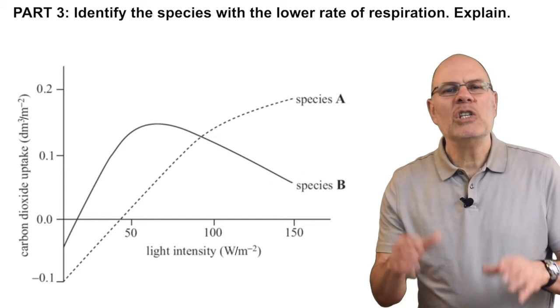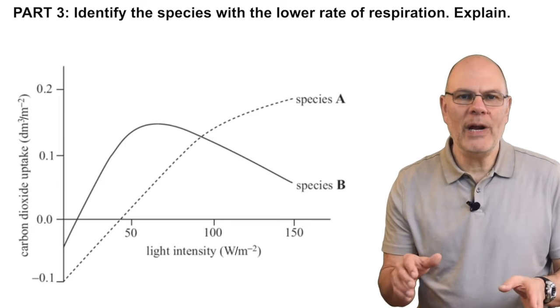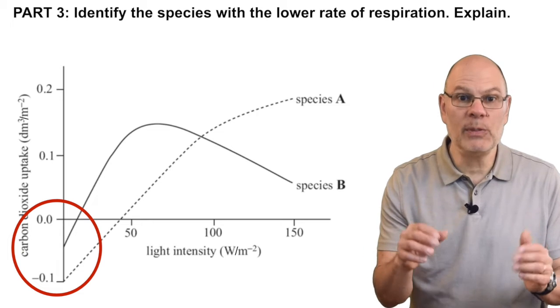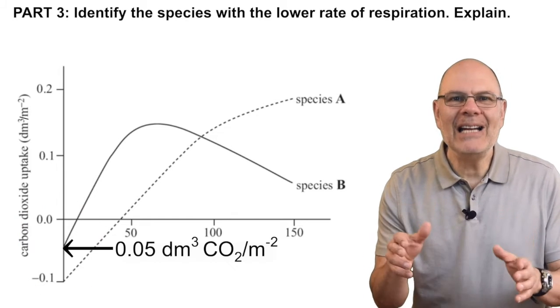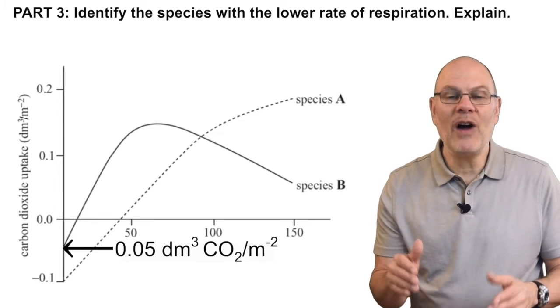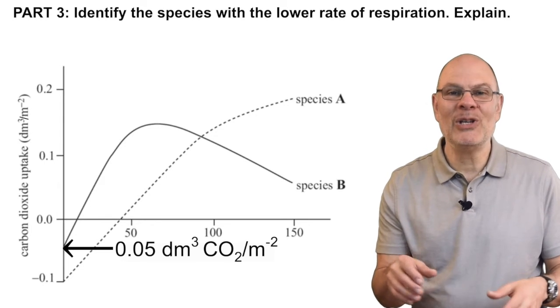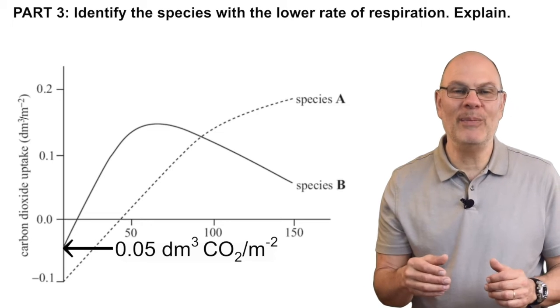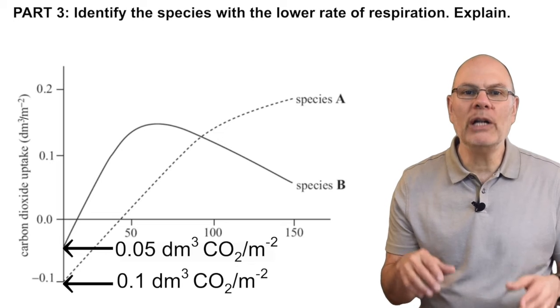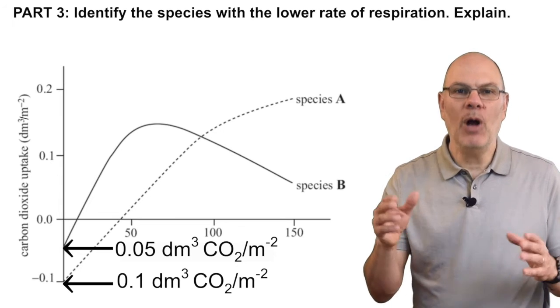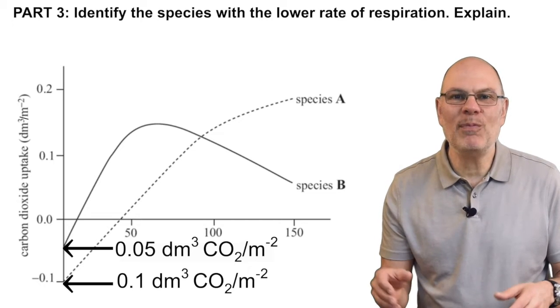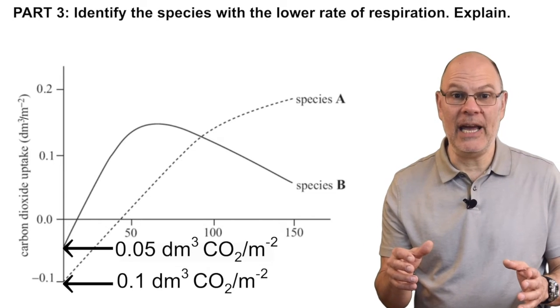Part three. Species B has a lower rate of respiration than species A. And you can tell that by looking at this part of the graph. At a light intensity of zero, plant B is putting out 0.05 cubic decimeters of CO2 per hundredth of a meter squared. Now compare this to plant A, which is putting out 0.1 cubic decimeters per hundredth of a meter squared. In other words, the respiration rate of plant B is half of that of plant A.